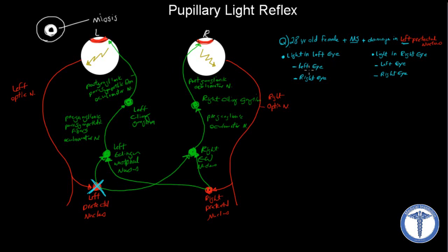So again, light in the left eye: the left eye remains the same with no change, and the right eye is also going to remain the same. What if we shine the light in the right eye? Well, this pathway is normal — the right pre-tectal nucleus is normal, the right optic nerve is normal, and the oculomotor and everything else is normal. So yes, we're going to see results: constriction of the left eye and also constriction of the right eye.